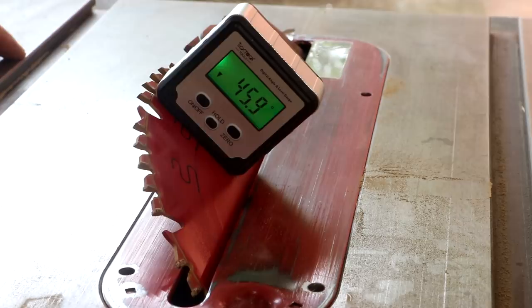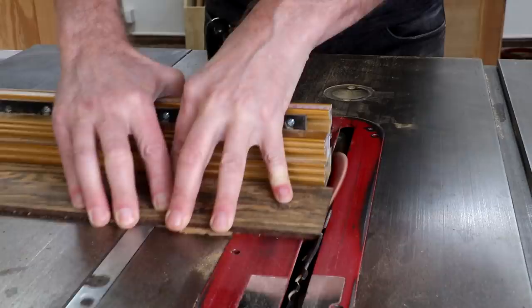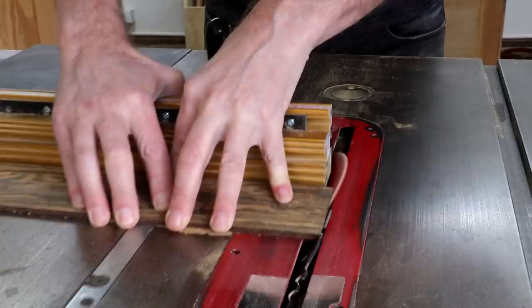I'll set my table saw blade to a 45 degree angle. This is going to be easier to cut these with my miter saw on the right side here. So I'll make my first cut on the edge.